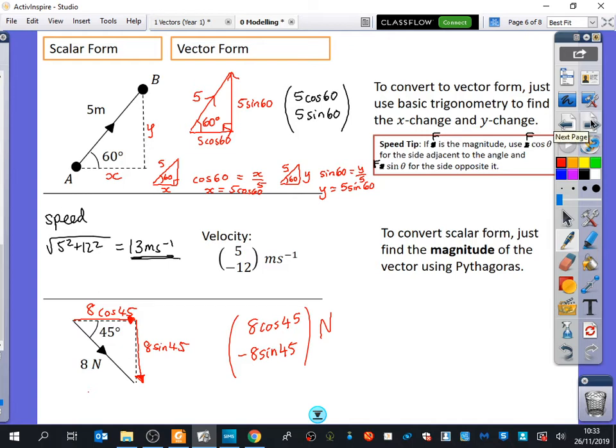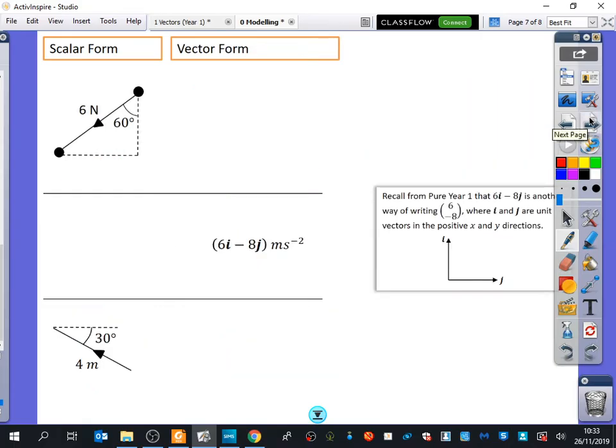Three more on the next page, and then we're going to wrap up. Okay? So this one, let's see if we can do these nice and quick. This is 6 newtons at an angle of 60 degrees. What do we think this one should be? First of all, is it going to be an up arrow or a down arrow on this side bit?